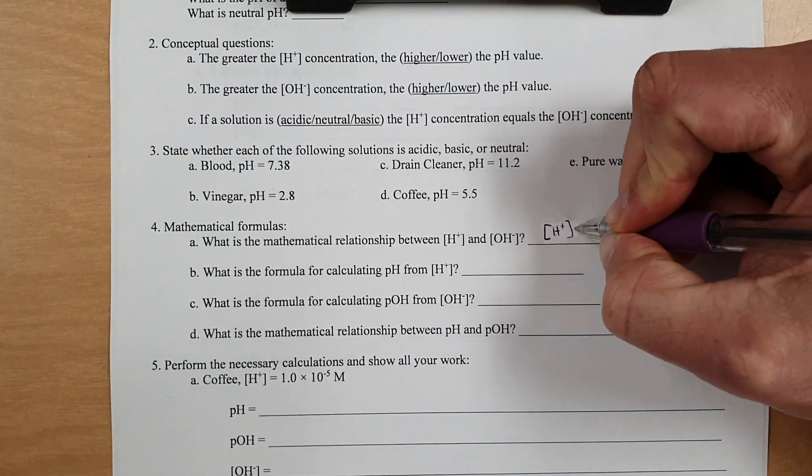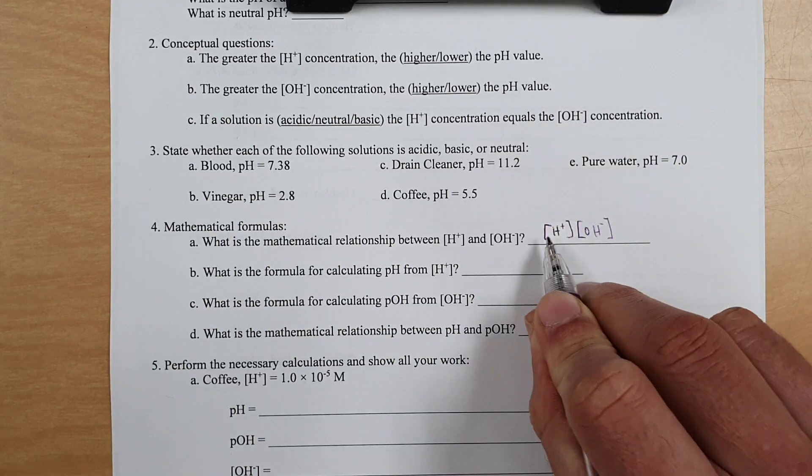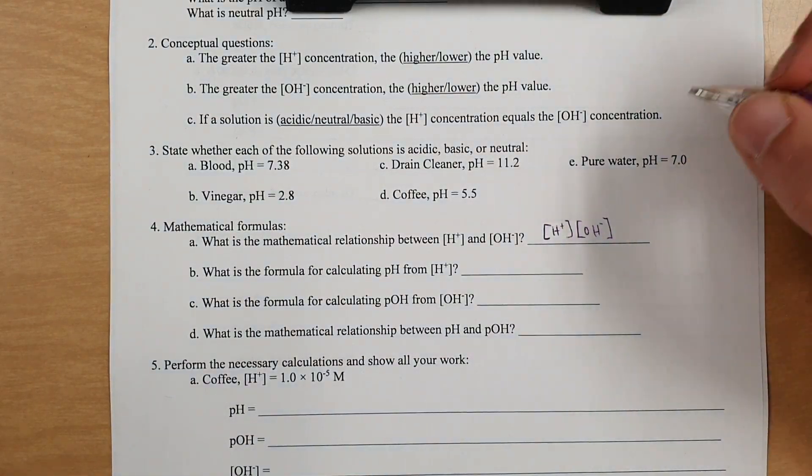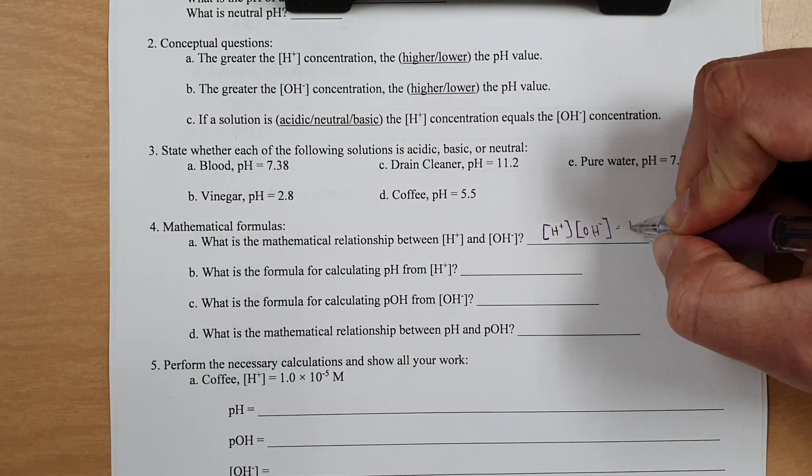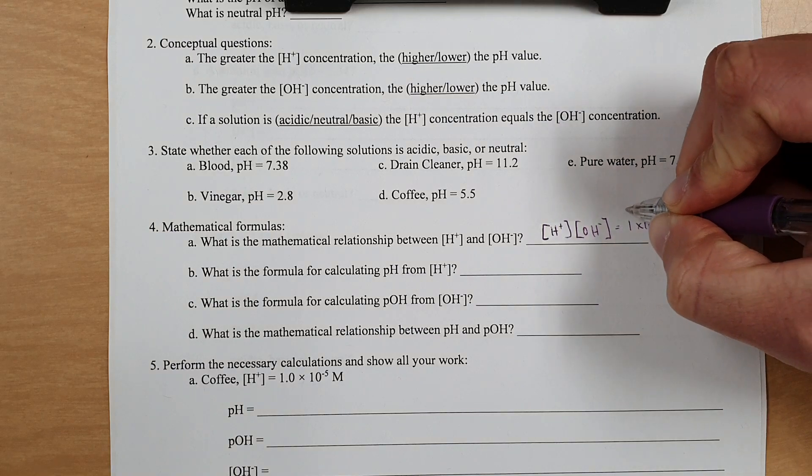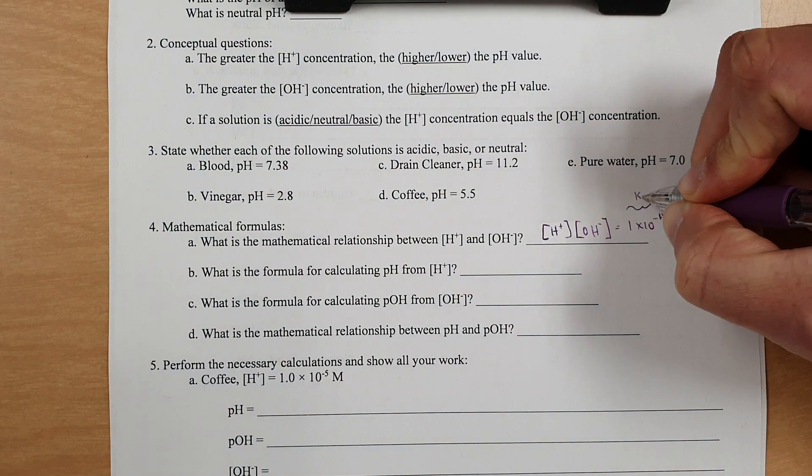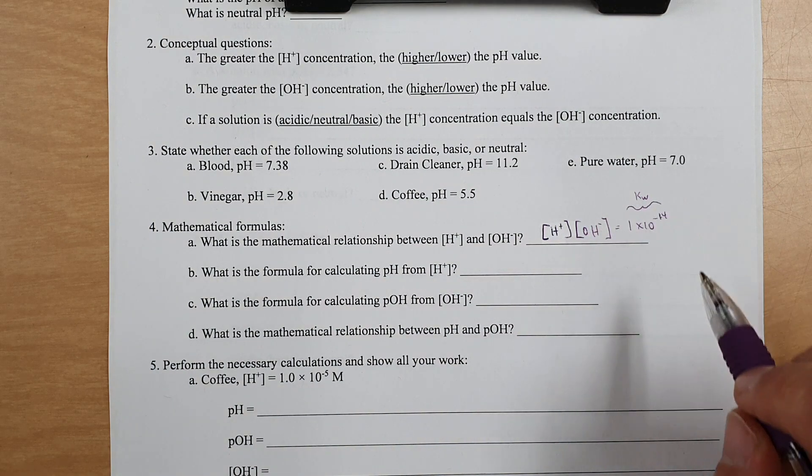Hydrogen ion concentration times hydroxide ion concentration equals 1 times 10 to the negative 14th. And this number is known as KW. So that's why I often see this times this equals KW because KW is this number.